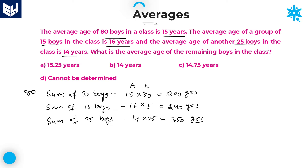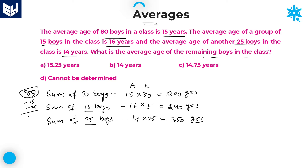Out of total 80 members, 15 plus 25 — 40 members' sum is 240 + 350 years. The question is: what is the average age of the remaining boys in the class? We need to find the average age of remaining boys. Out of 80 members, 15 and 25 boys are accounted for, so 80 minus 40 = 40 boys remain.